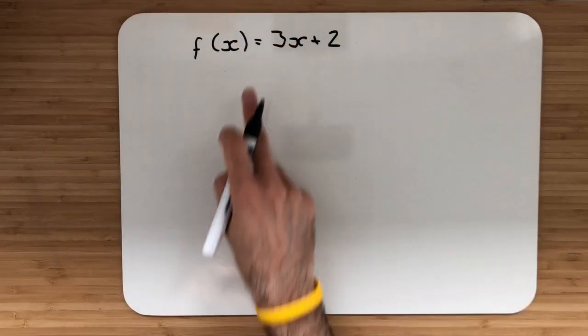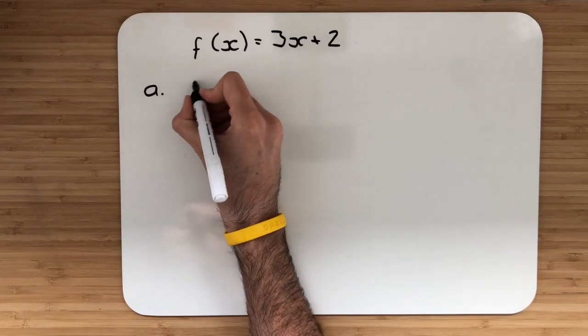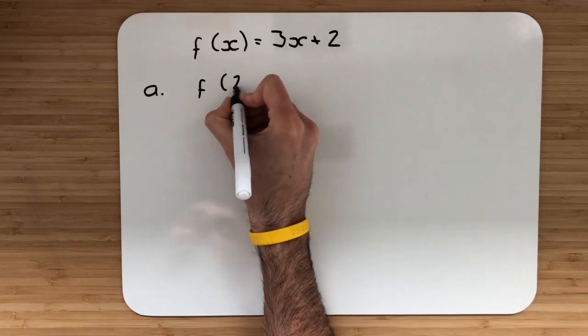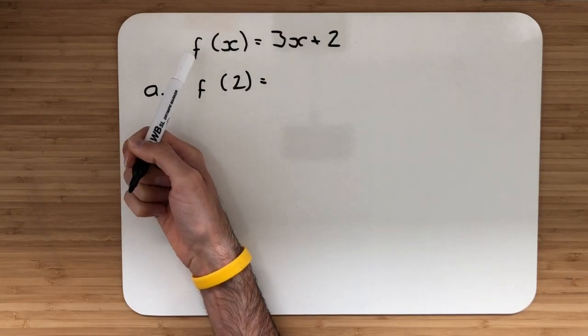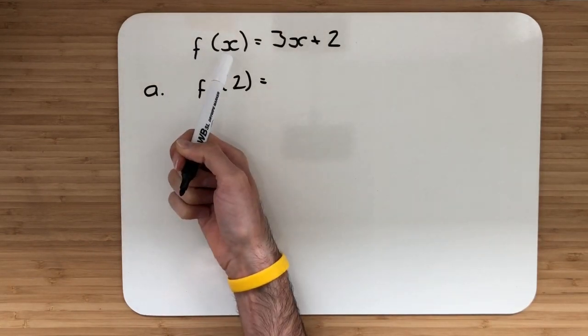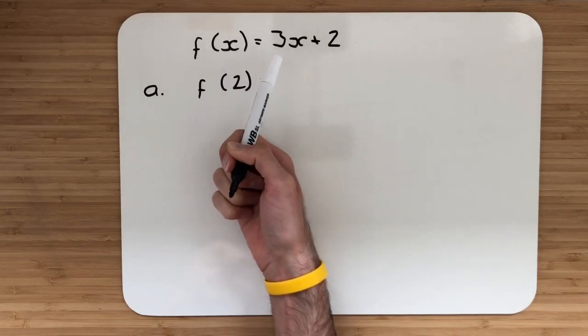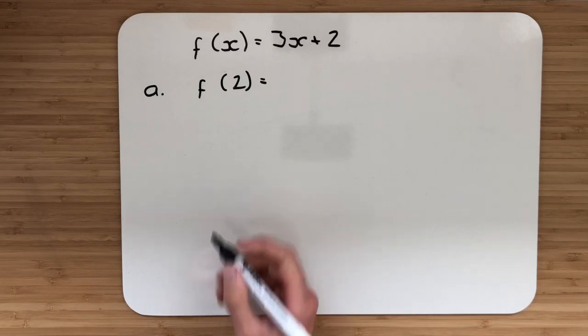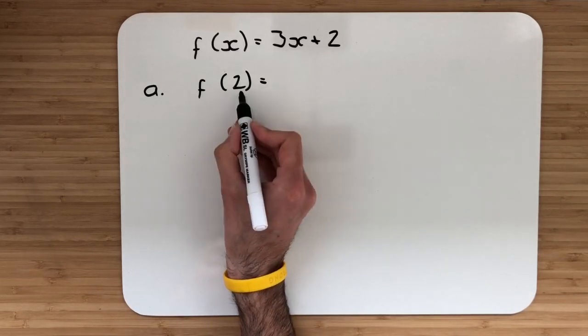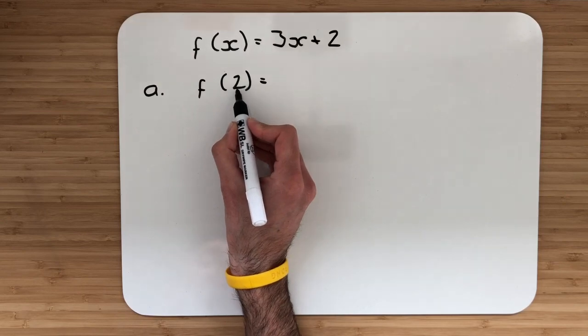In example 1, we've been given the function f of x is equal to 3x add 2, and part a would like us to find the value of f of 2. Now f, we know that's just the name of the function, and we're inputting various values of x to get our output. Now to get that output, we have to put it through this function 3x add 2. We want to find the value of f of 2. Wherever there is an x, we are going to replace it with the number 2.